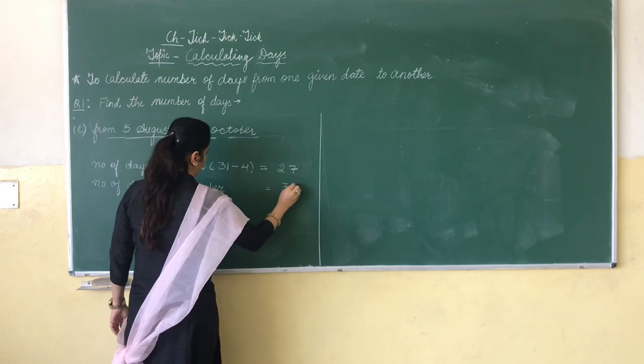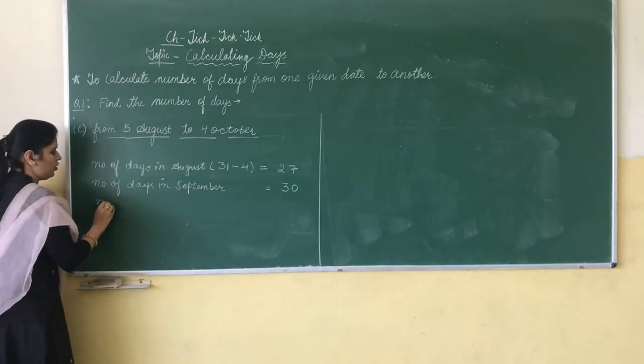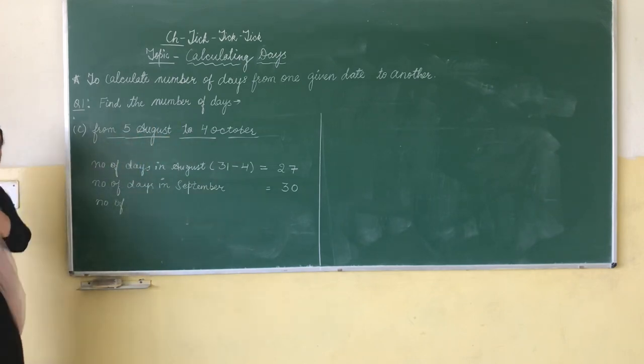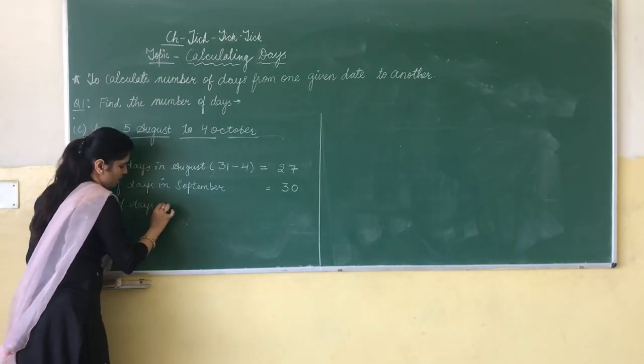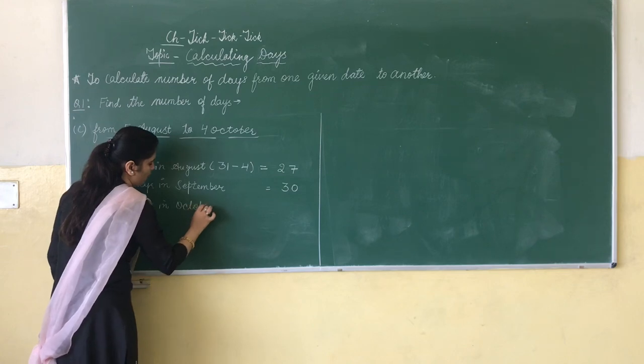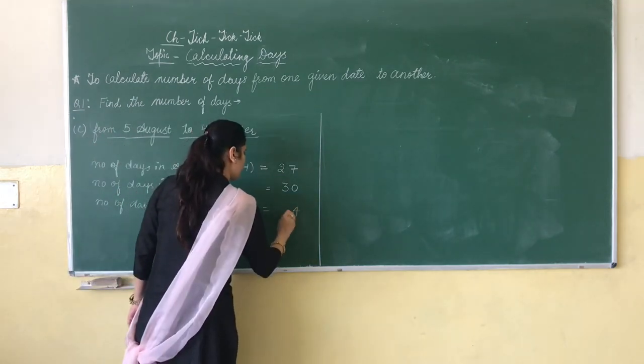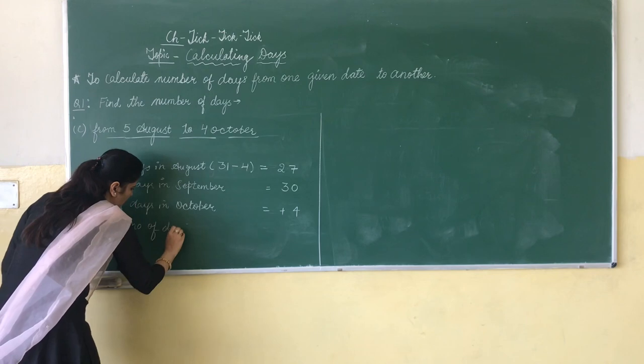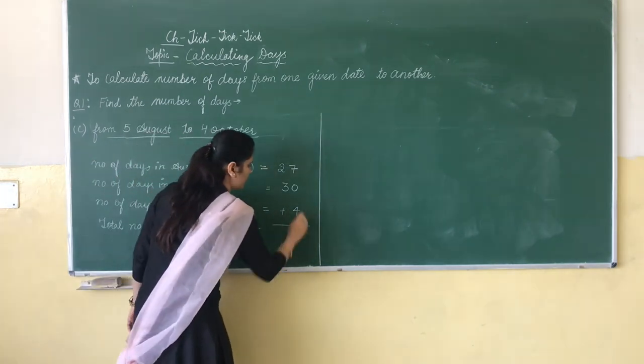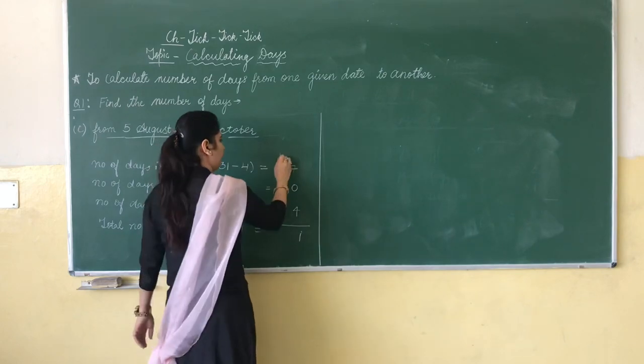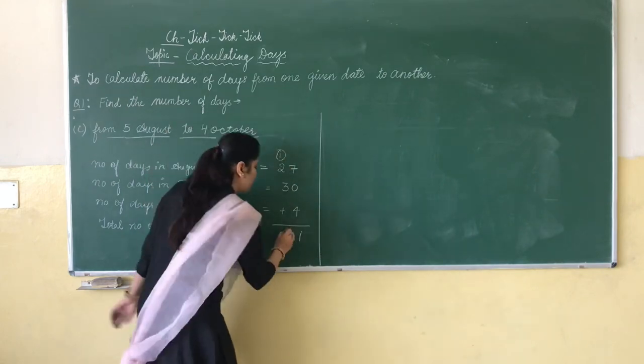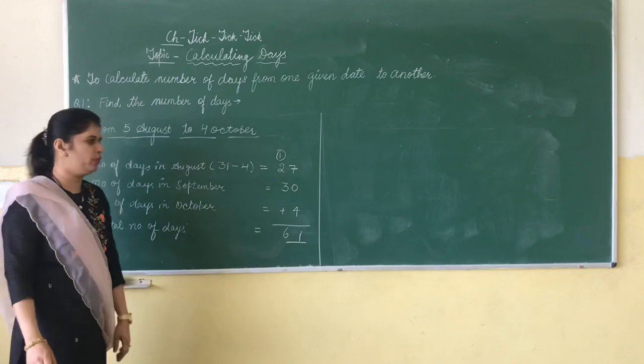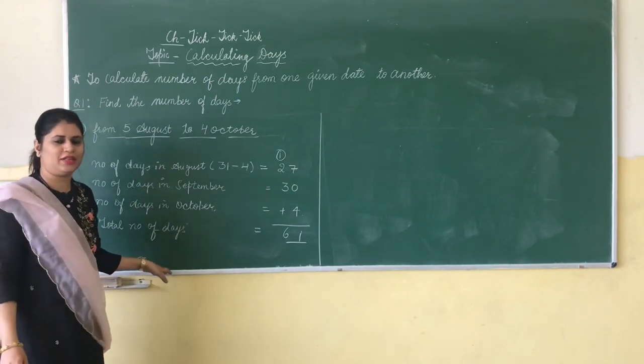Number of days in October, from 5th August to 4th October, how many days of October? 4 days. Total number of days, 7 plus 4 is 11, 1 carry forward, 3 plus 2 is 5, 5 plus 1 is 6. So 61, the total number of days from 5th August to 4th October. I hope you all understood this. Thank you so much.